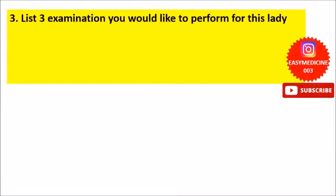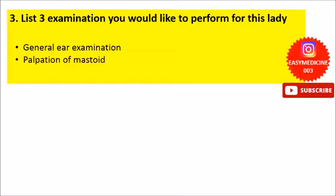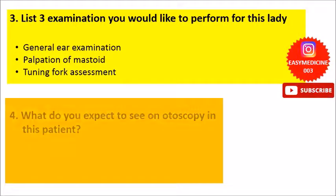The next question was to list at least three examinations to perform for this lady. To diagnose external ear pathology, we can perform a general ear examination, followed by palpation of the mastoid to elicit any tenderness if the mastoid is involved. Next, we can do a tuning fork assessment for any hearing loss. For this patient we suspect she must be having a conductive hearing loss.